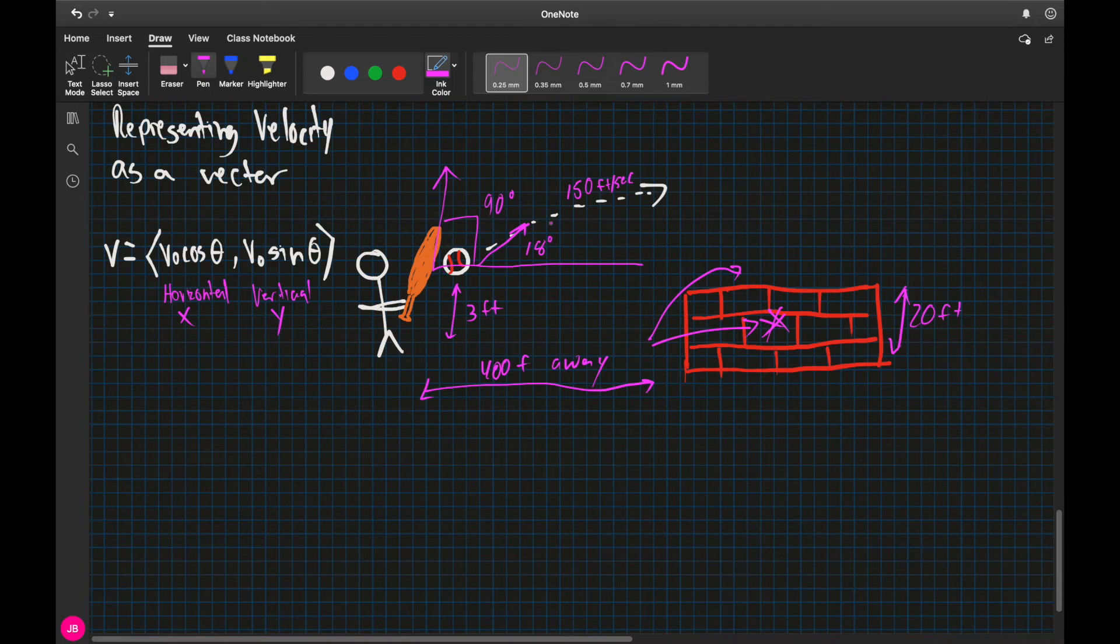And so for every one foot that it went up, every one foot was in the vertical direction. So the path of the flare, it traveled one foot, and that whole one foot was in the vertical direction.